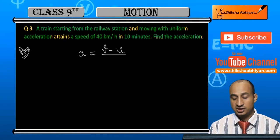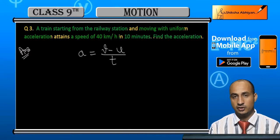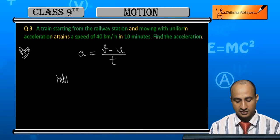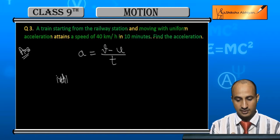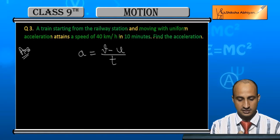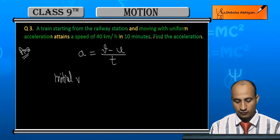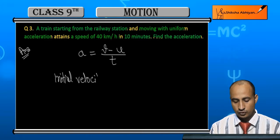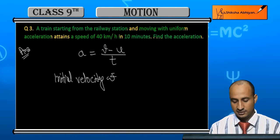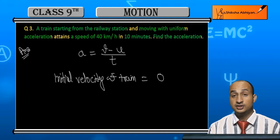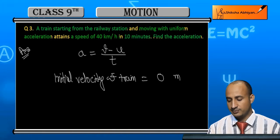Initial velocity of train equals 0 meter per second.